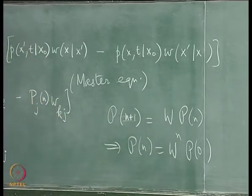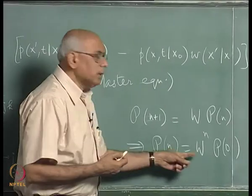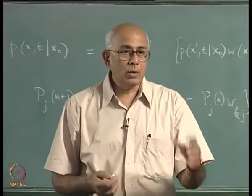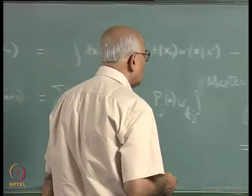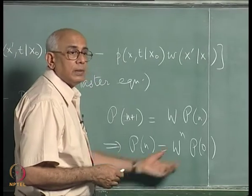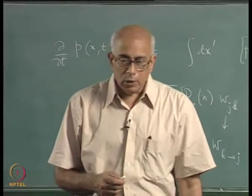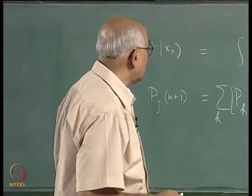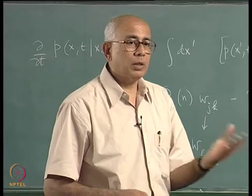For large state spaces, computing the nth power of a matrix is not trivial. The approach is to diagonalize the matrix or, at least, bring it to Jordan canonical form, after which taking the nth power is straightforward. This is essentially a problem in matrix algebra. Let us now look at an extremely simple example in continuous time where the state space contains only two possible values.